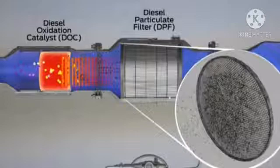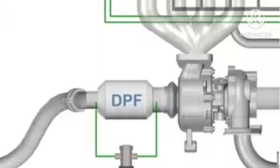There are two ways of doing the regeneration process. First, you should take the vehicle immediately to an authorized dealer. Second, manual regeneration can be done as mentioned in the owner's manual. For manual regeneration, the vehicle should be driven on a highway in a particular gear for at least 40 to 60 minutes.